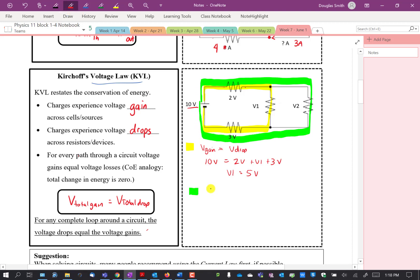Once again, the voltage gain equals the voltage drop. So my gain is 10 volts, and then it drops 2 volts, drops V2, drops 3 volts. Once again, that number is going to be 5 volts. V2 equals 5 volts. So that's how you use Kirchhoff's voltage law.